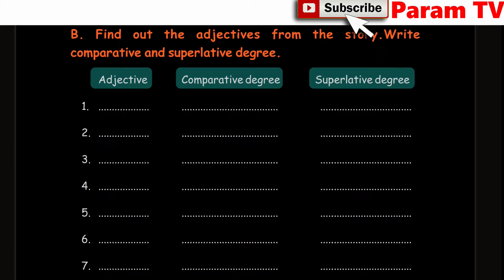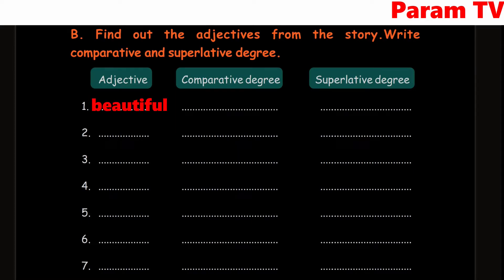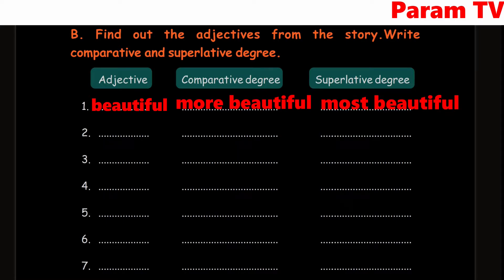Next, find out the adjectives from the story and write the comparative and superlative degree. We have to find adjectives from the story and write them in comparative and superlative degree. Like we studied in the previous lesson — from that same lesson, we will see which adjectives appear and what their degrees are.